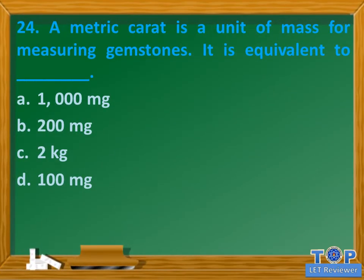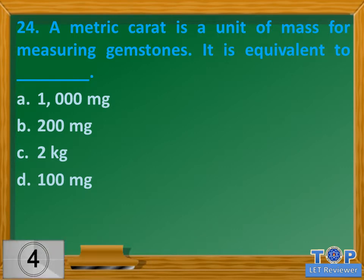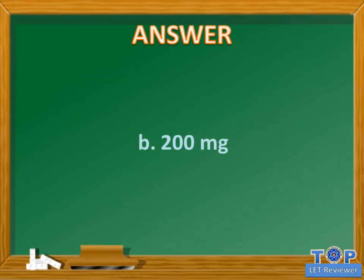Question number 24. A metric carat is a unit of mass for measuring gemstones. It is equivalent to blank. A. 1000 mg. B. 200 mg. C. 2 kg. D. 100 mg. Answer: B. 200 mg.